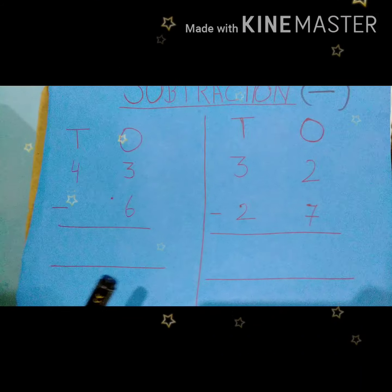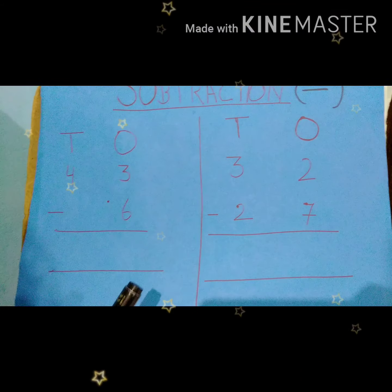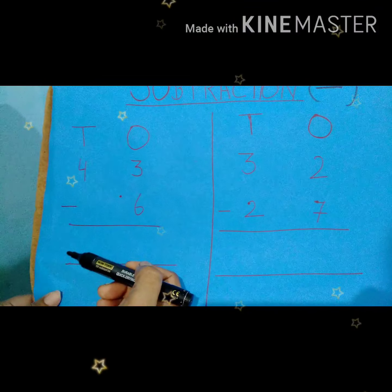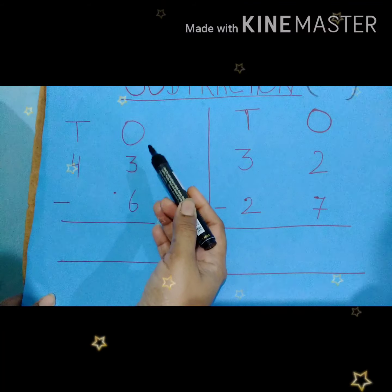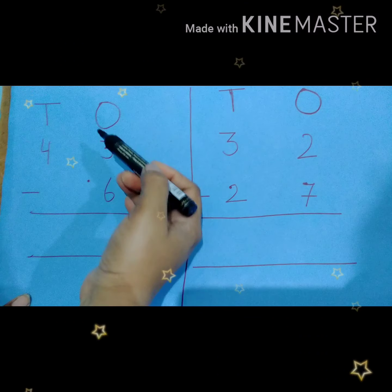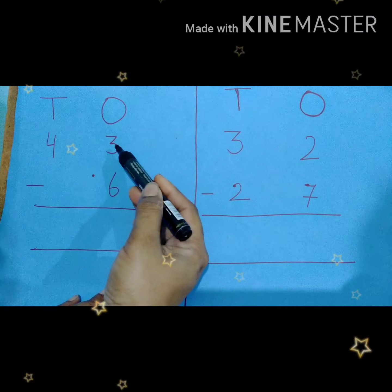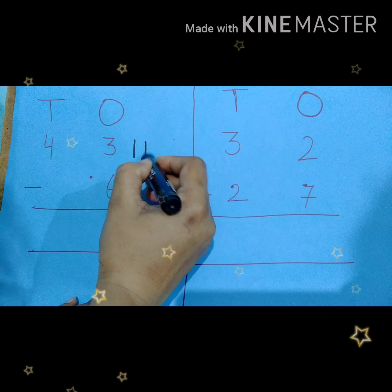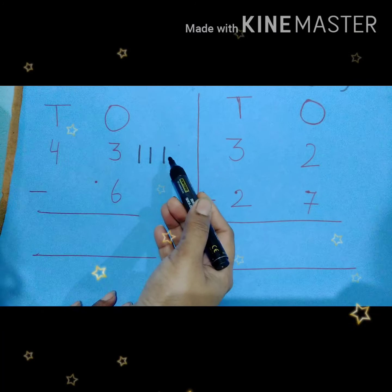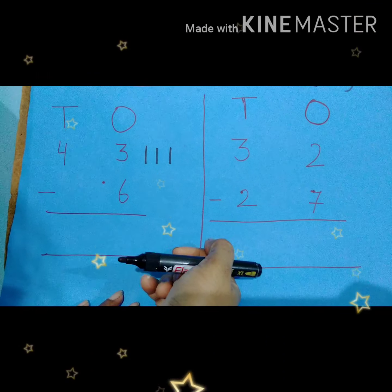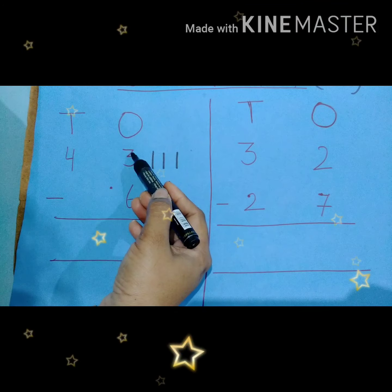Now we will learn about subtraction with regrouping. What is regrouping? Regrouping means to make groups of 10's. How we can make groups of 10's? Let's see from these examples. I have a sum here: 43 minus 6. You all know we should always start subtraction from 1's place. Here we have 3 minus 6. Can we subtract 6 from 3? Here we have 3 — if we draw 3 lines and below we have 6, is it possible to subtract 6 lines out of 3? No.